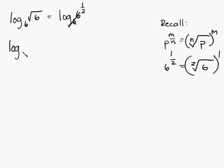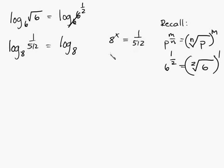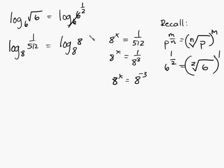Let's do a few more examples. Log base 8 of 1 over 512. We can write this as log base 8, and let's see what 1 over 512 is: 8 to the x equals 1 over 512, which is 1 over 8 to the third power. So 8 to the x equals 8 to the negative 3. That means log base 8 of 1 over 512 equals log base 8 of 8 to the negative 3, which equals negative 3.